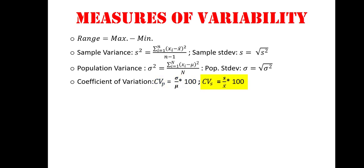For the sample, we compute the coefficient of variation by taking the sample standard deviation divided by the sample mean, multiplied by 100.